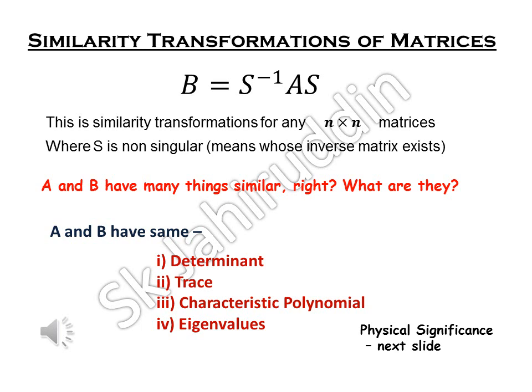Everybody knows that if two matrices are related by B equals S inverse AS, then A and B are similar matrices or they are related by similarity transformation. Your S matrix should be an n cross n matrix which is non-singular, means S inverse of S must exist of course.